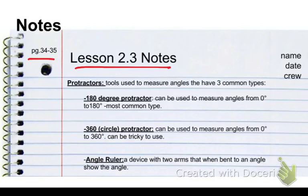We're going to want to put page 34 through 35 in the upper left-hand corner to show what page we are on and where we can go back to our textbook to find some information. We're going to make sure we've got our name, we have the date, and we have the crew. Those are all important facts to have.